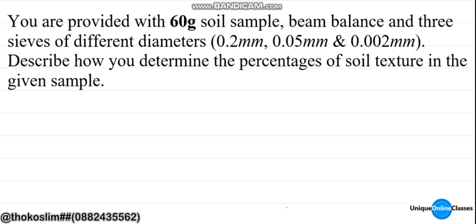Let's say you have been asked this kind of question. You are provided with 60 grams of soil sample, a beam balance, and three sieves of different diameters: 0.22mm, 0.05mm, and 0.002mm.